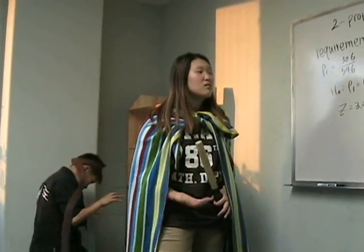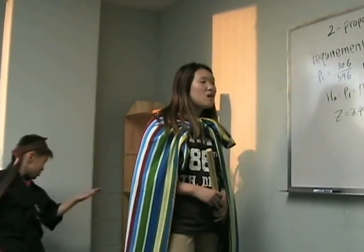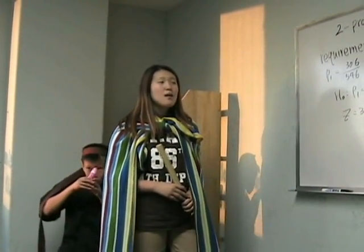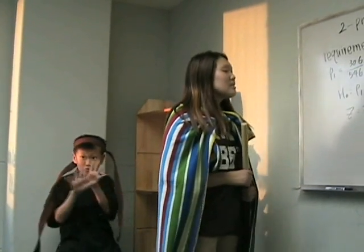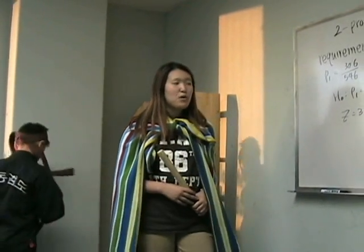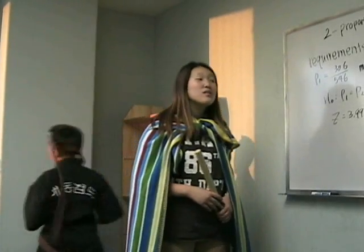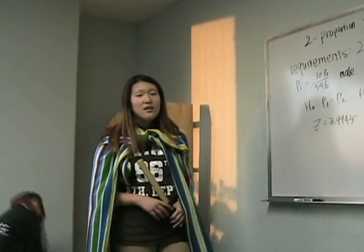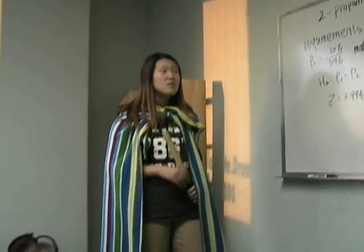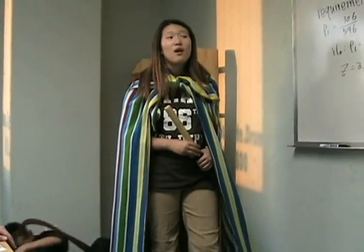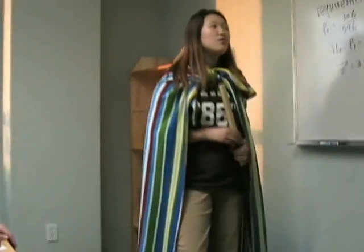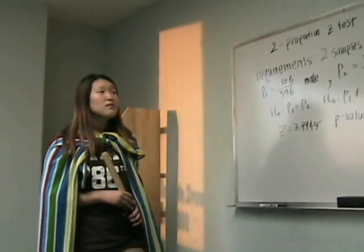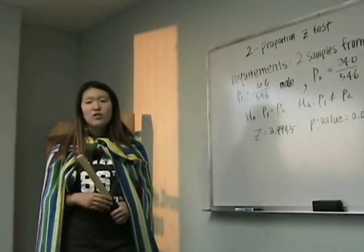The requirements are met because it's from two binomial settings — it's either they're males or females. The null hypothesis is that P1 equals P2, and the alternative hypothesis is that P1 is not equal to P2. The Z statistic is 3.9945, and the p-value is 0.000649. Based on this p-value, which is so small, there is evidence to reject the null hypothesis at the 1% level. Therefore, in this case, the proportions of males and females in the genre of horror are actually different, and they are statistically significant.